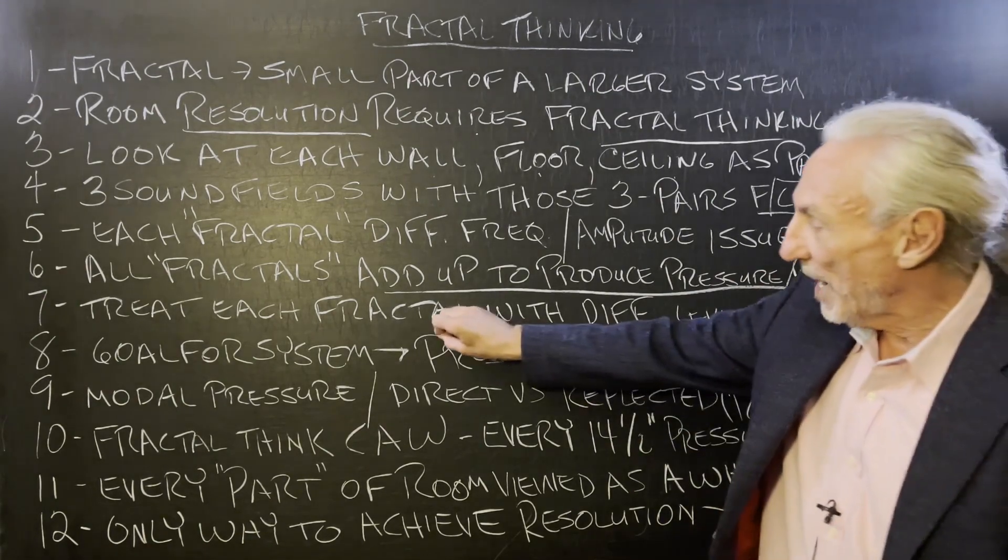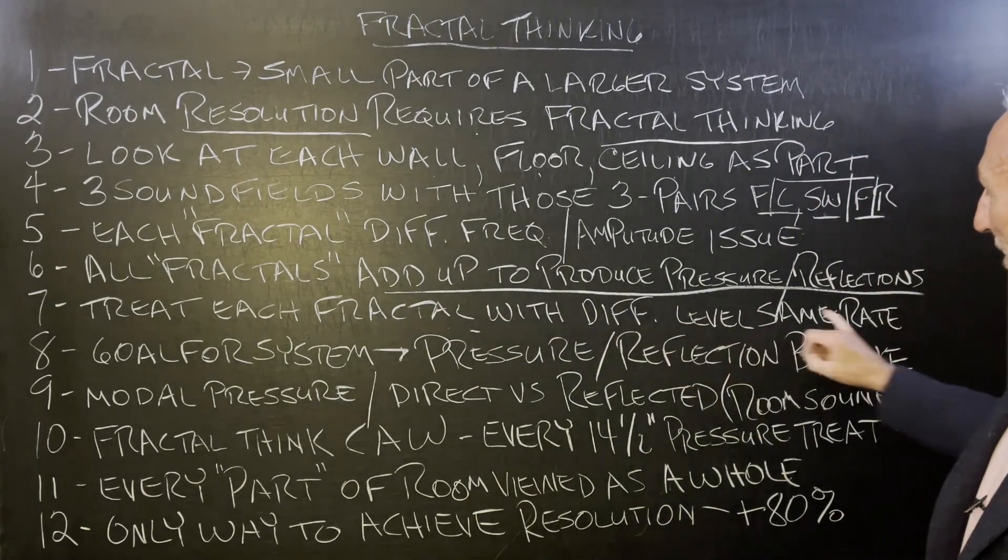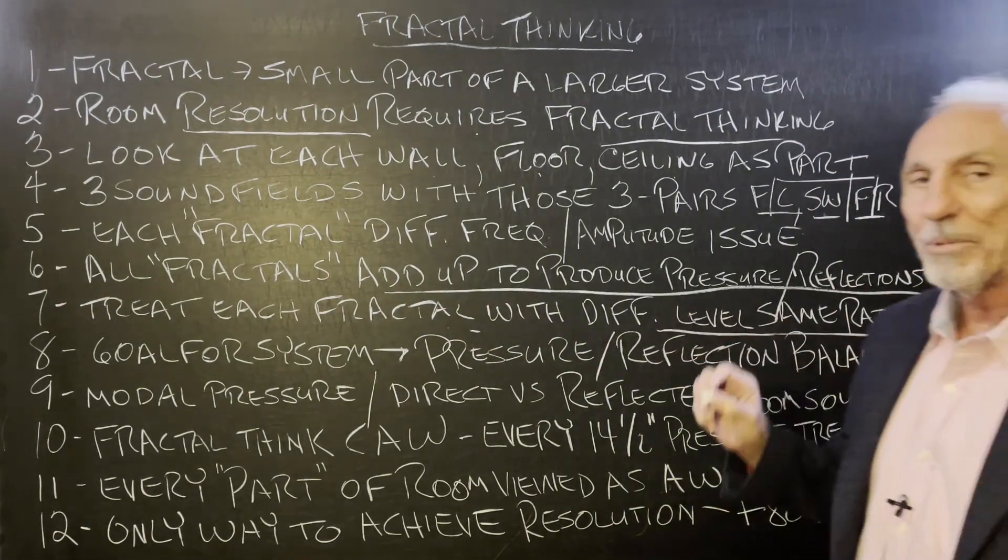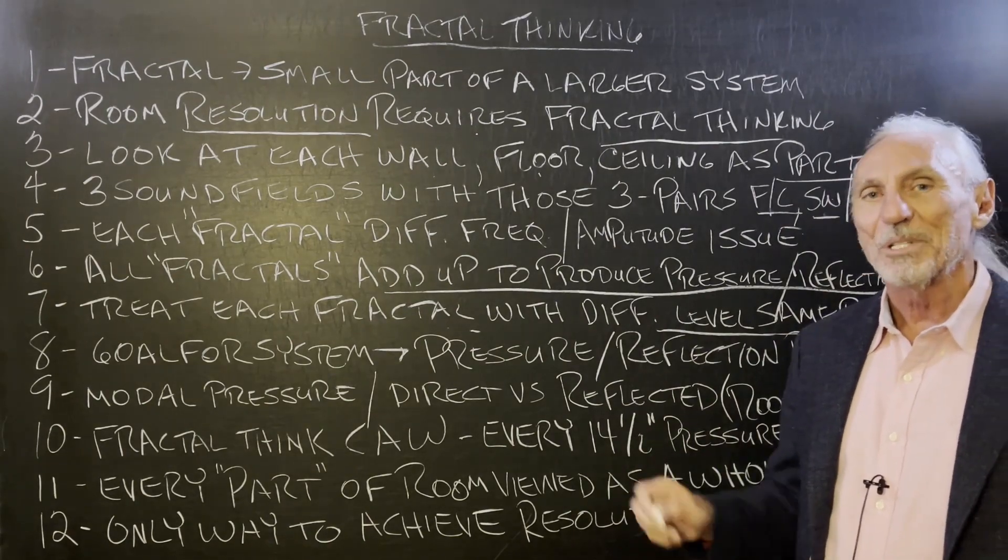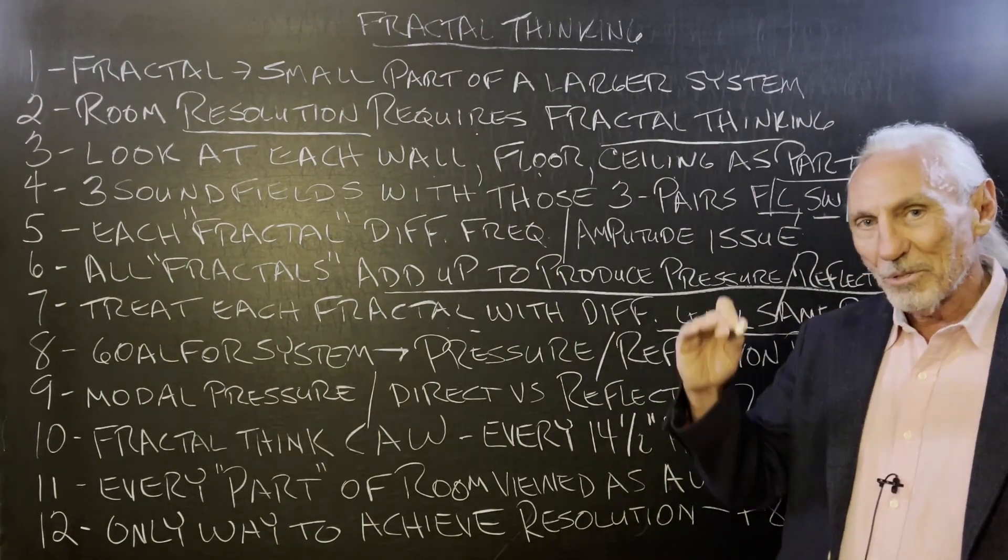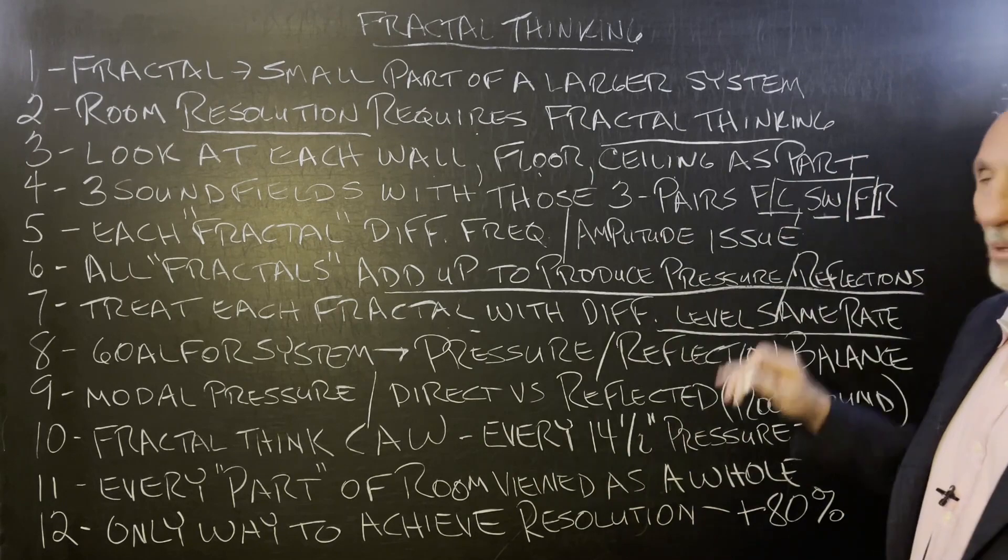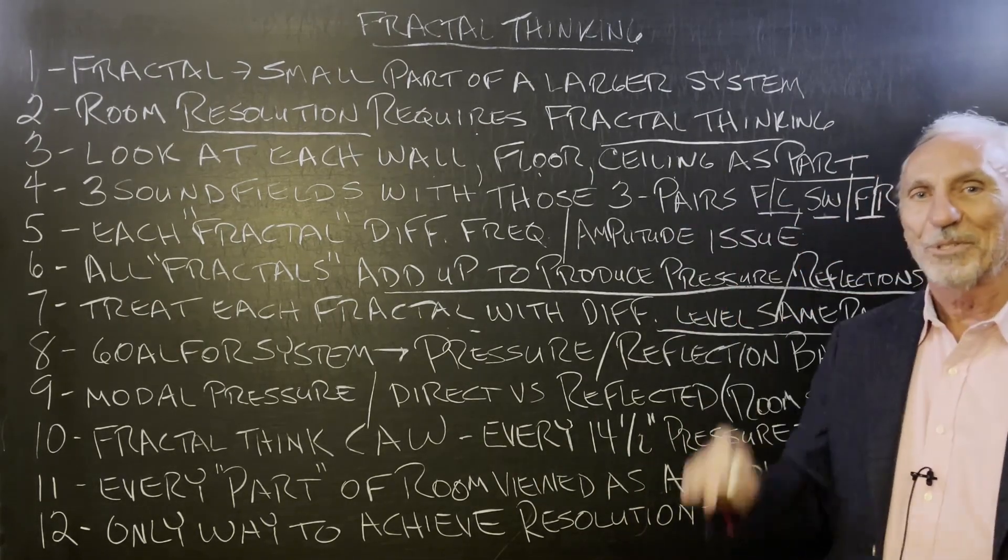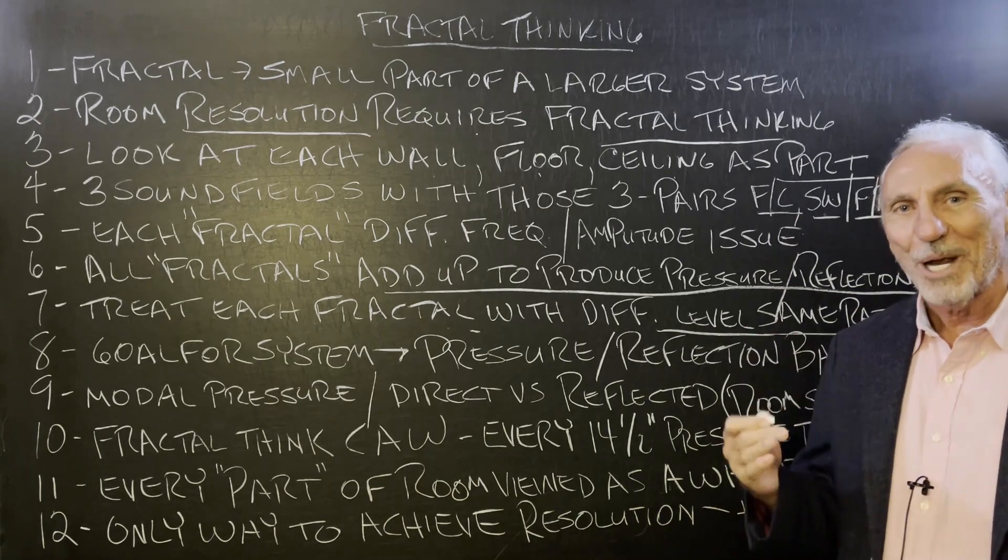So each fractal, each wall surface area has different levels that we need to treat. And we want to keep the rate if we use an absorption the same. So we want to go to the level that the surface area requires, but then we want to keep the rate uniform on all surface areas. That's why I always harp on rate of absorption.